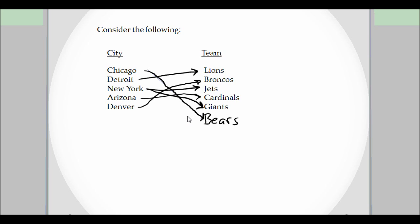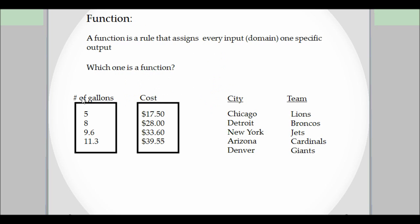So that's all we need to know right now is that we took a relation as our input, in this case our city, and the team as our output. And in this particular example, New York, the input, has two outputs, the Jets and the Giants.